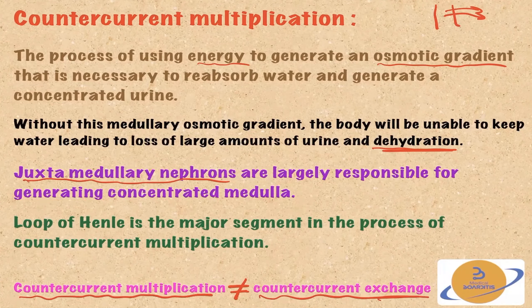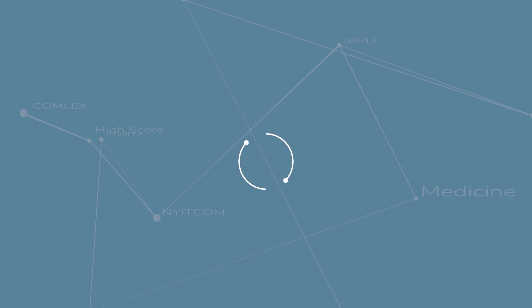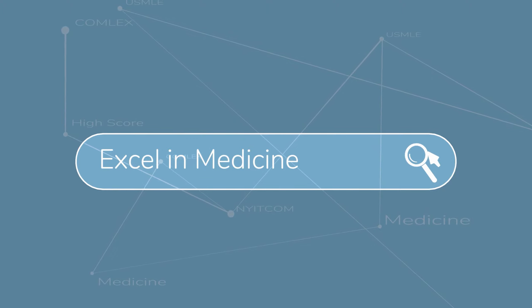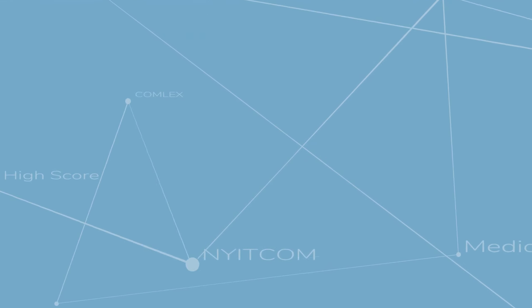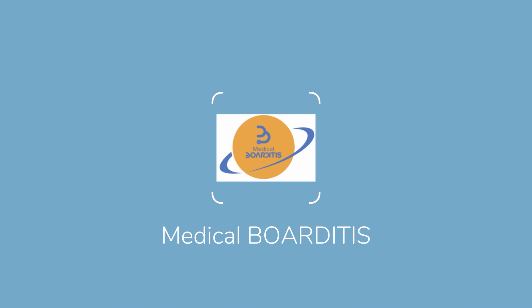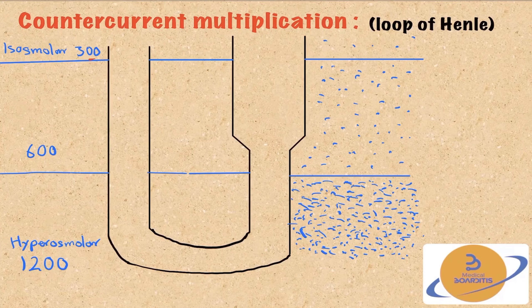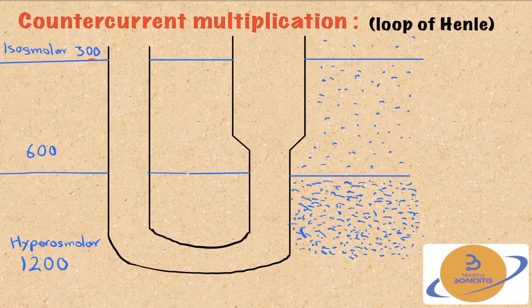Juxtamedullary nephrons are mainly responsible for generating a concentrated medulla because they dig more deeply into the medulla. The loop of Henle specifically is the major segment responsible for counter-current multiplication. Please don't confuse counter-current multiplication with counter-current exchange — counter-current exchange is a totally different process and mechanism, which we'll discuss later in the video.